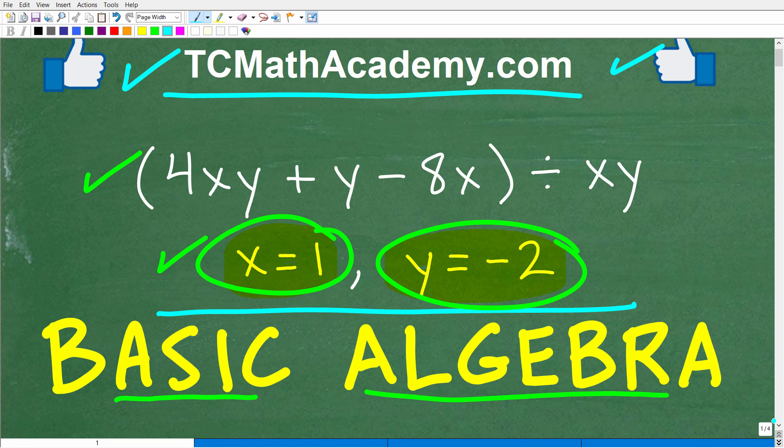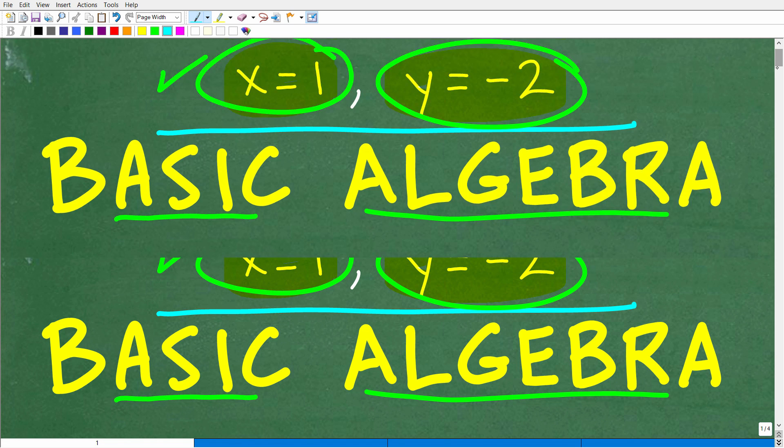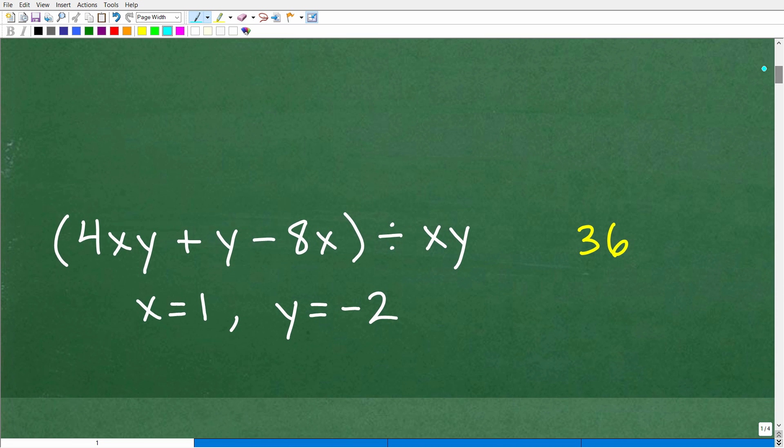Okay, so pretty straightforward problem here. Again, we want to evaluate this variable or algebraic expression for these values. I'll tell you what this word evaluate means in just one second. But hopefully it's pretty obvious what to do. And let's go ahead and take a look at the answer. The correct answer is the following. It is 36.